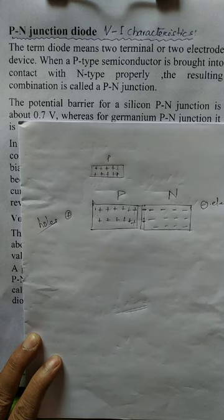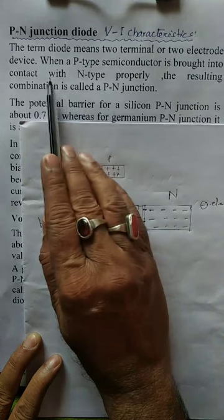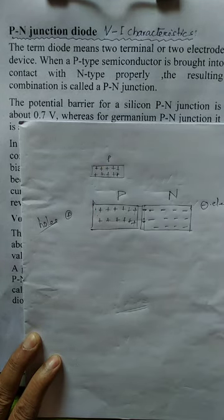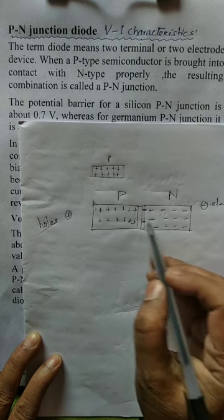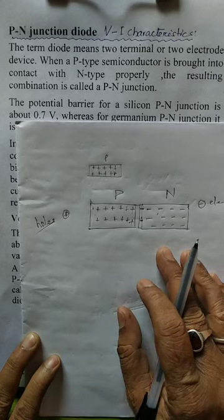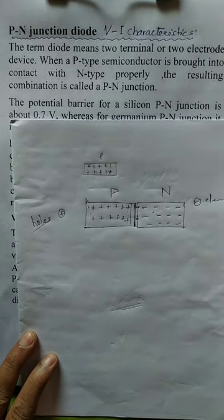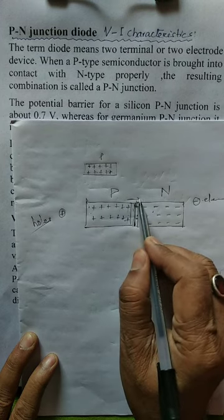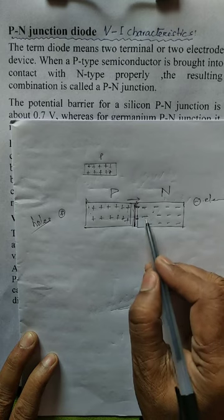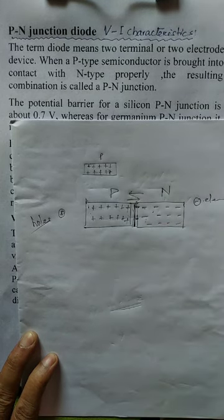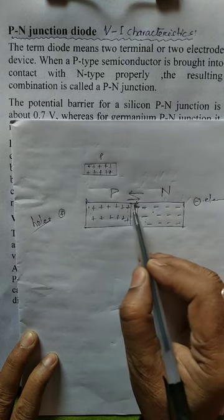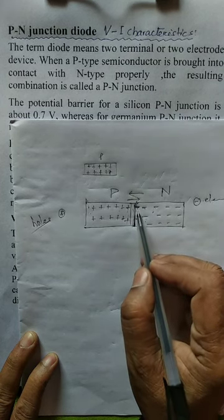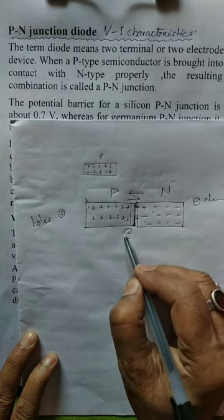When a p-type semiconductor is brought into contact with n-type properly, the resulting combination is called a p-n junction, and it is called a diode because it has two electrodes. As the junction is formed, holes move from the p-side and electrons move from the n-side to p-side. So, positive charges proceed towards the junction and negative charges from the other side also proceed towards the junction.